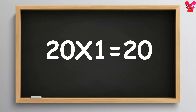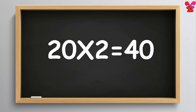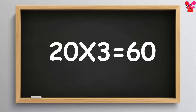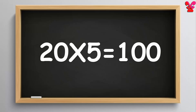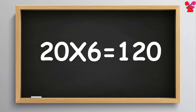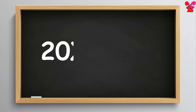21s are 20. 22s are 40. 23s are 60. 24s are 80. 25s are 100. 26s are 120. 27s are 140.